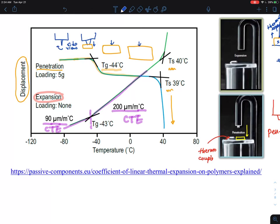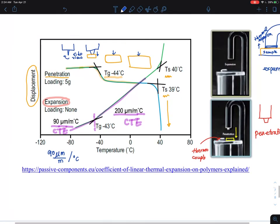This is 90 micrometer per meter per degree C. That's how much of the things are expanding here. And then eventually when you go up here, this is another softening transition temperature. It's expanding much more rapidly. This is the rubbery state and this is the glassy state.